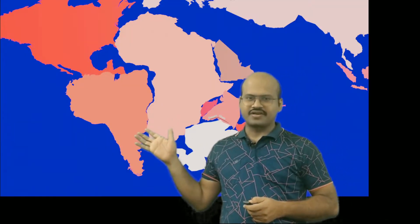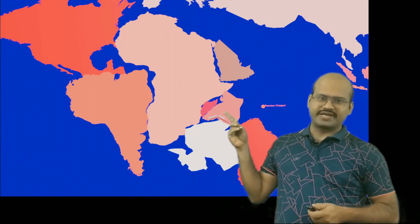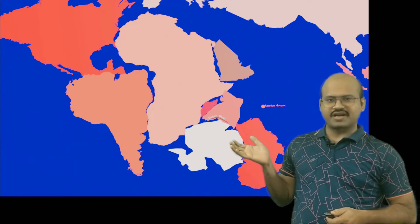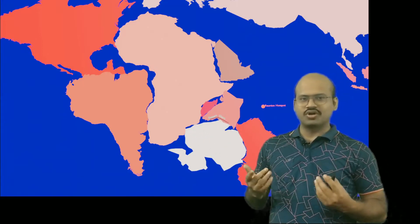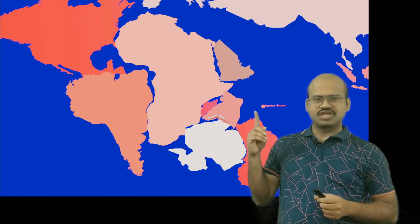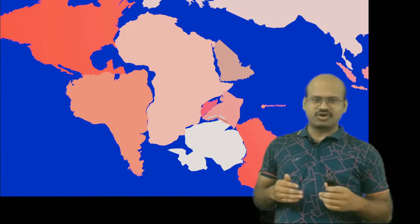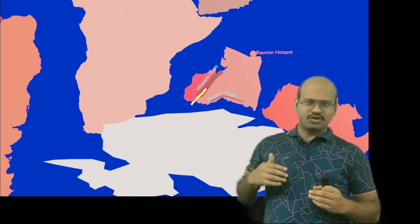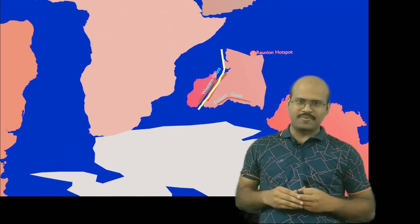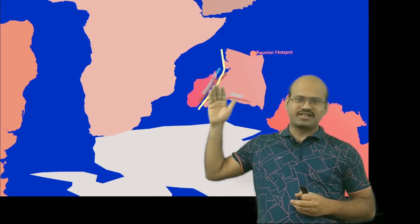This is the map of our world just after the breakup of Pangaea. The Indian subcontinent is attached to the African continent, Australian continent, and Antarctica; Madagascar is in the middle. At this time the Eastern Ghats were already formed. We can also see the Reunion hotspot in a dormant state. Over time due to tectonic activities, the Indian subcontinent got separated from Africa, the Western Ghats were formed, and then it separated from Antarctica and Australia. The Western Ghats were divided — half went with Madagascar, half remained with the Indian subcontinent.